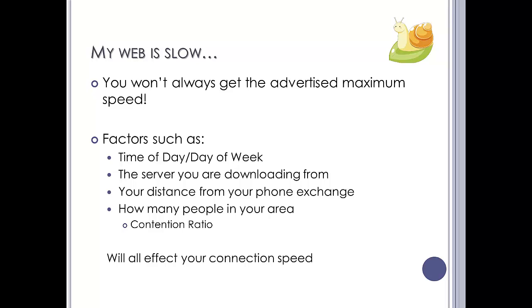Also, how many people in your area actually go through the exchange? They sometimes call that a contention ratio — for example, your exchange's connection rate might be split amongst 20 people. That depends on whether they're on it at the time and what they're doing, whether they're uploading, downloading, etc. Some ISPs will actually quote the contention ratios, or certainly they used to.